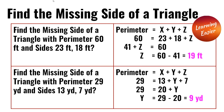Find the missing side of a triangle. Find the missing side of a triangle with a perimeter of 60 feet and sides 23 feet and 18 feet.